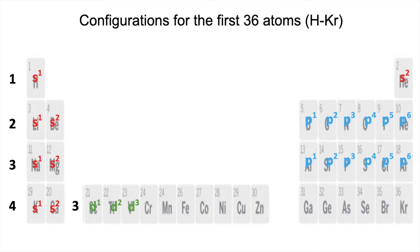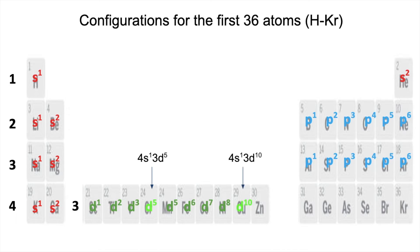Chromium breaks the rule — it's not 3d4 but 3d5, so its configuration is argon, 4s1, 3d5. The pattern picks back up: iron is 4s2 3d6, cobalt 3d7, nickel 3d8. Then copper is another exception — not 4s2 3d9 but 4s1 3d10. Zinc is 4s2 3d10. Then we go to the 4p subshell, which fills as you'd expect, 4p1 through to 4p6, finishing at krypton.